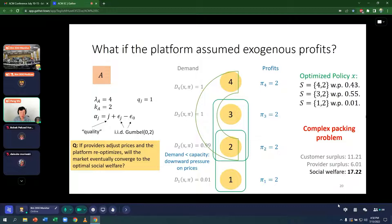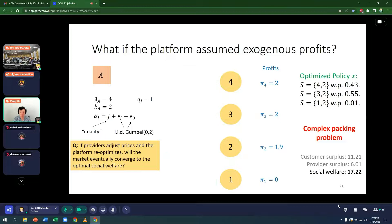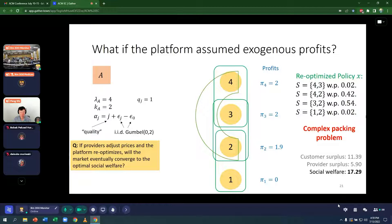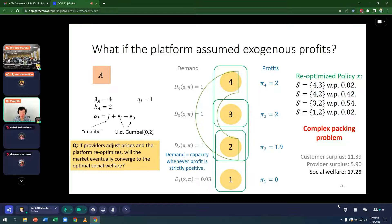Notice that in this policy, the demand for providers 1 and 2 are less than their capacity of 1. So this puts downward pressure on their prices. And suppose they reduce their profits and then the platform re-optimizes, this is the policy. And now demand equals capacity whenever profit is strictly positive. Meaning that even though providers have the power to adjust their profits, they have no reason to. Look at provider 4, the highest quality one. Even though provider 4 may be able to increase profits, because the platform rations the number of recommendations to this provider 4, he gets very little demand. So then he has no reason to increase profits.